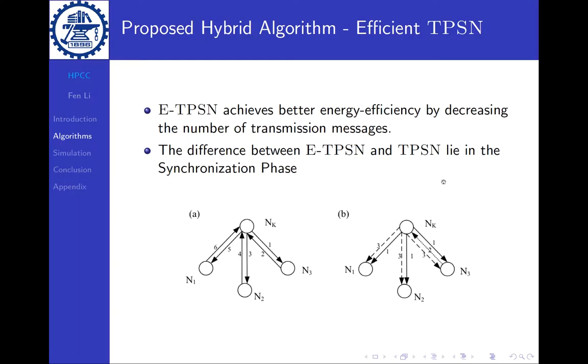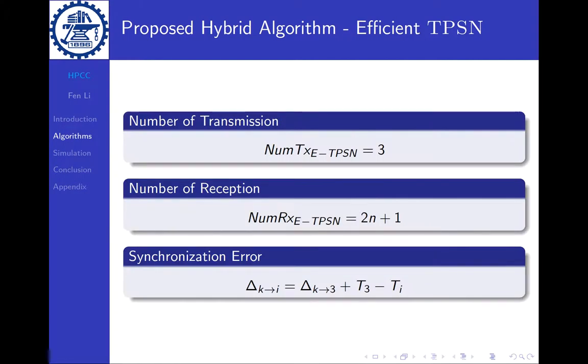So it is very obvious that the number of messages is significantly decreasing. The number of transmissions is always three, no matter how many nodes we have, and the number of receptions is 2N plus 1. The synchronization error delta from K to node i is based on the error from K to node 3, which is the closest node that we choose, and then the difference between the time T3 and Ti.